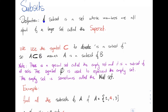The subset is a set whose members are all a part of a larger set called the superset. We use the symbol to denote 'is a subset of,' so here we see A ⊆ B, which means A is a subset of B. Whenever we read this, it should instantly ring in our minds that A is a subset of B.